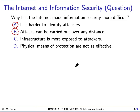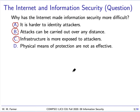Another example: if you have a company and set up a web server for your clients and customers, you're exposing the infrastructure your web server is based on to the world. And finally, D — physical means of protection are not as effective. It used to be you could just secure your building and be safe. Now your building could have servers that need to be available to the outside world, and the outside world can get into your building using the internet.